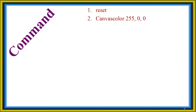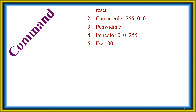We use the RGB color 255-0-0 for red. Pen width 5. Then pen color for blue is RGB 0-0-255. These are the commands for setting up the canvas and pen before drawing.